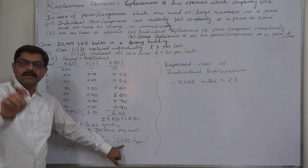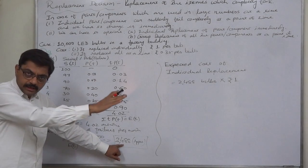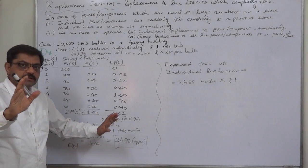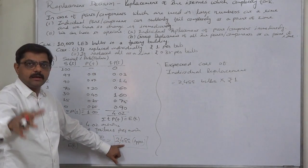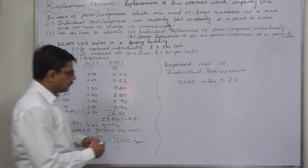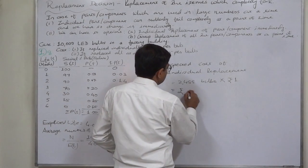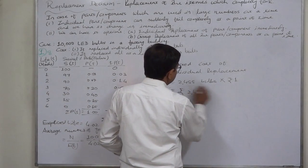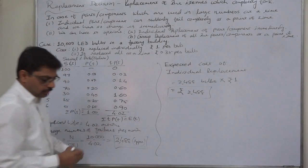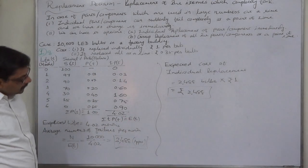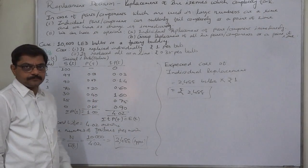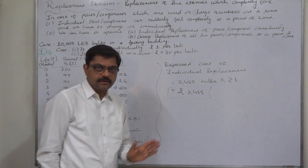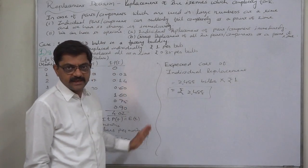In all days, we will be replacing different number of bulbs as and when a bulb stops to work. So every month, 2,488 will be the cost of individual replacement. Every day we will be replacing different number of bulbs. This was part one of the solution and discussion.